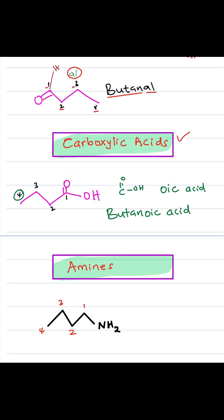Next, carboxylic acids. Carboxylic acids have an alkyl group, a carbon-oxygen double bond, and then OH — written as RCO2H. In this case, we have carbon number 1, 2, 3, and 4 carbons, so the name is butane. But because it's a carboxylic acid, you end it with oic acid — so butanoic acid.